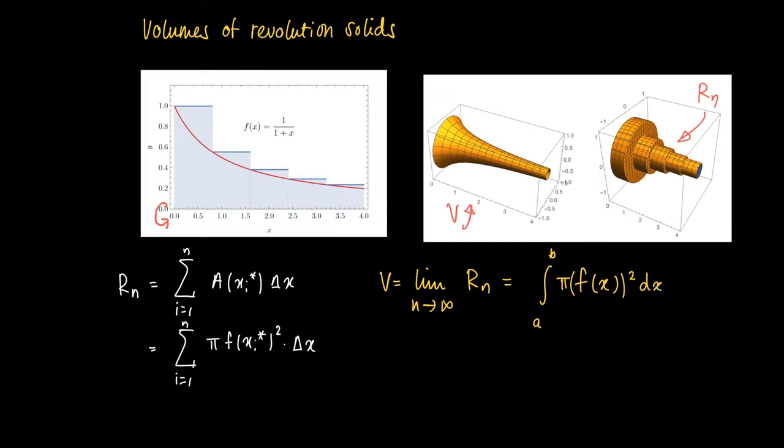So this is the volume of a revolution solid where we rotate a graph around the x-axis.